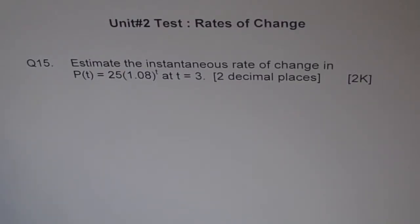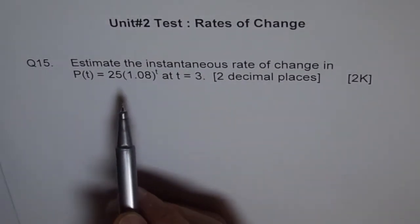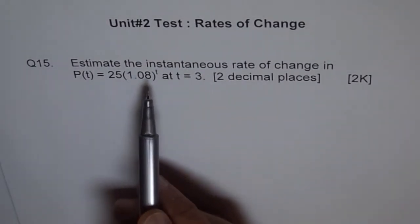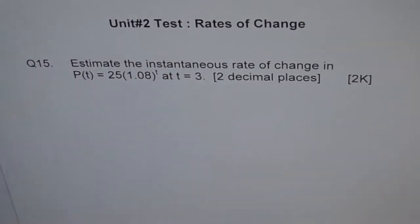Question 15, Unit 2, Rates of Change. The question is: estimate the instantaneous rate of change in the function p of t equals 25 times 1.08 to the power of t, at t equals 3, to 2 decimal places.